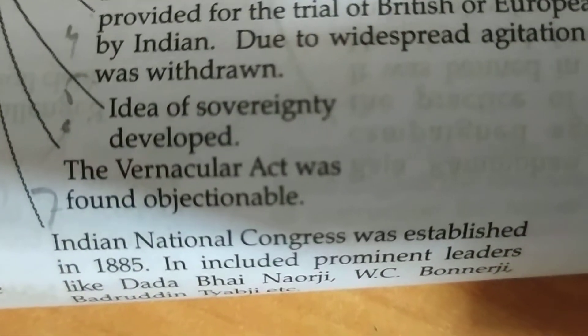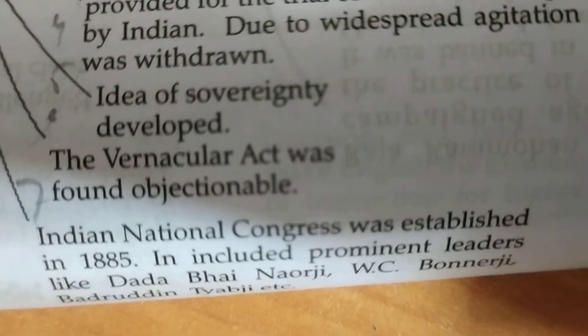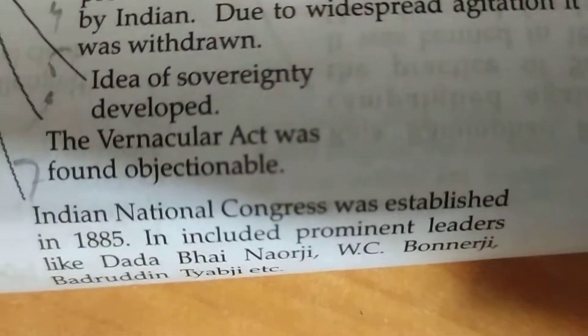Also in 1878, the same year, the Vernacular Press Act was found objectionable because it said that you cannot publish anything critical of the British government without their permission. If anyone did so, their printing machines and everything would be confiscated. People found it very oppressive.